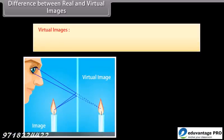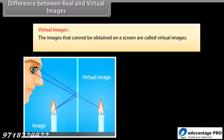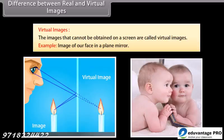Virtual images: the images that cannot be obtained on a screen are called virtual images. Example: image of our face in a plane mirror. It is formed by a convex lens.